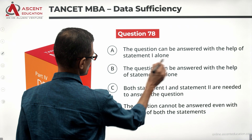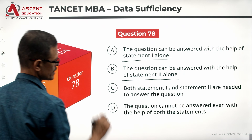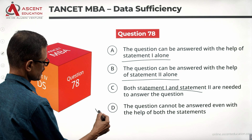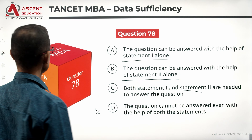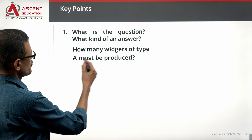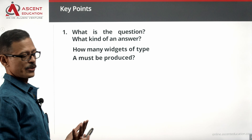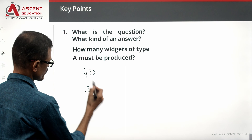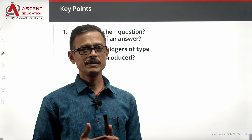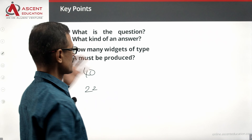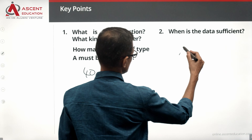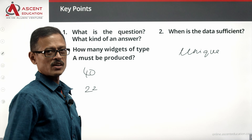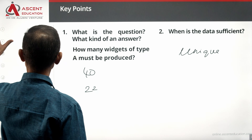The answer options are: A if statement one alone is sufficient, B when statement two alone is sufficient, C when one and two together are sufficient, and D if the data is insufficient. The question asks for a specific number of type A widgets — say 40 or 22. If the answer is a unique number, the data is sufficient.